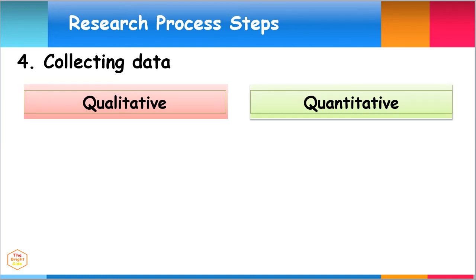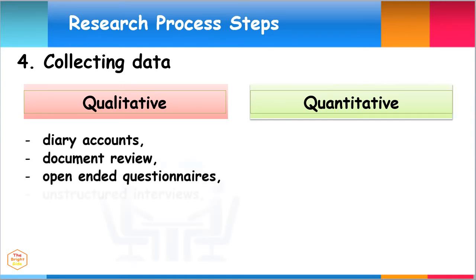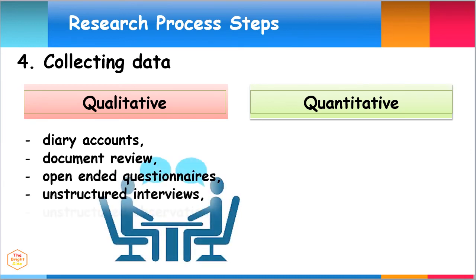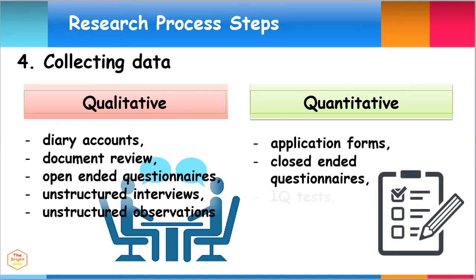In qualitative research, data collection may include diary accounts, document review, open-ended questionnaires, unstructured interviews, or unstructured observations. Quantitative research may include application forms, closed-ended questionnaires, IQ tests, or other measurements.